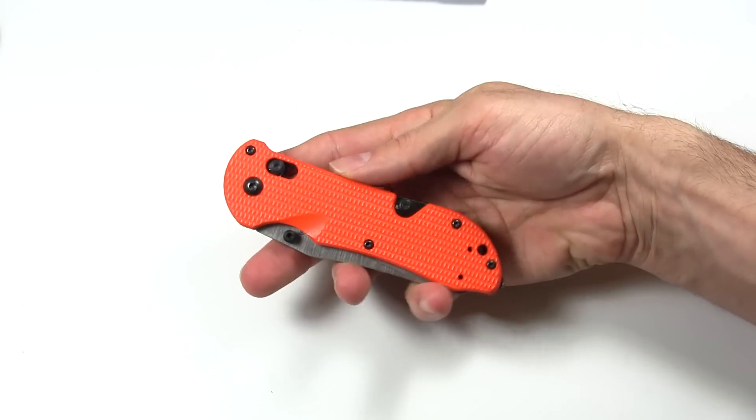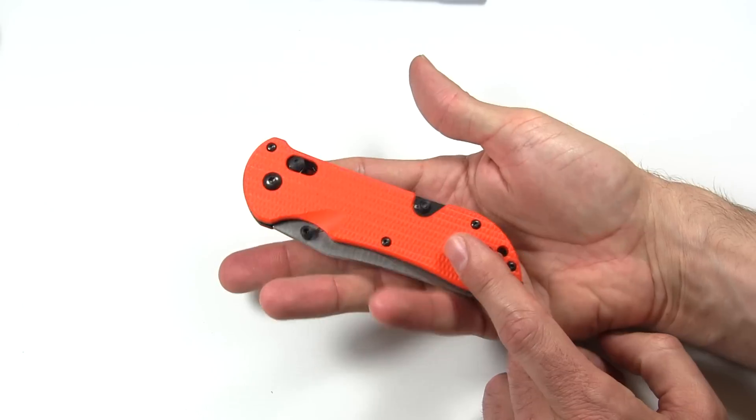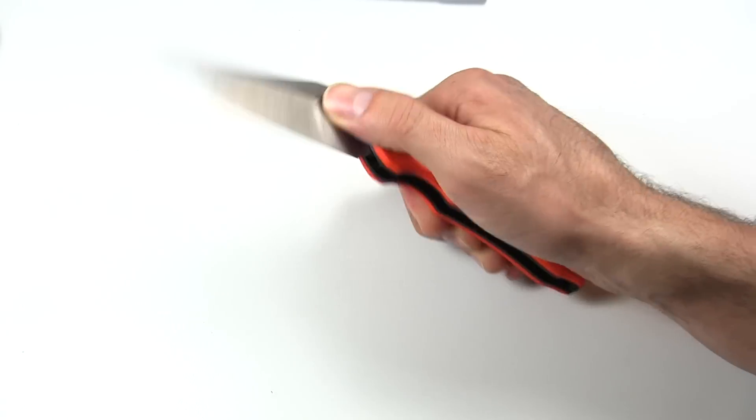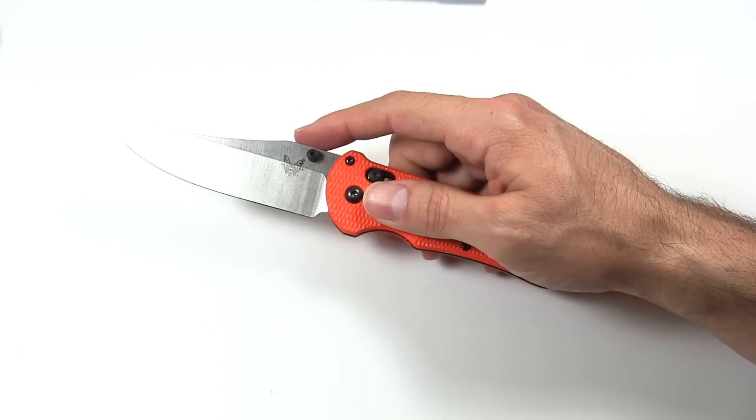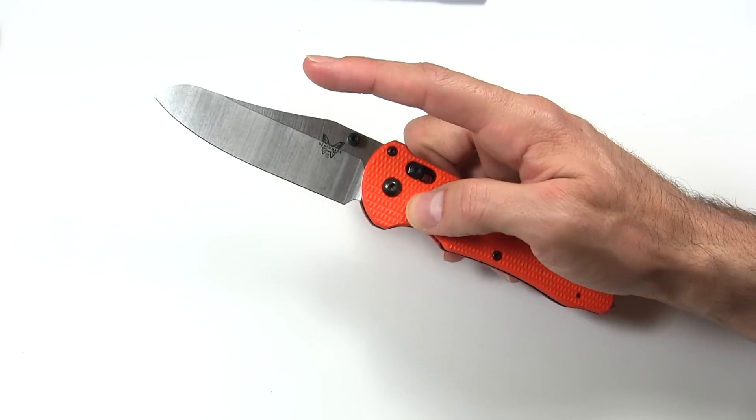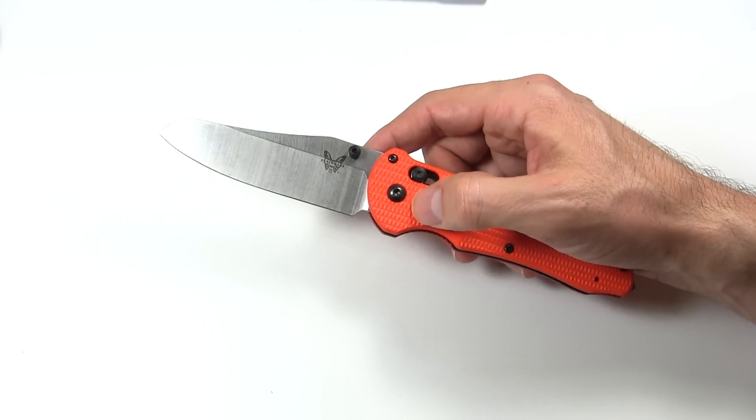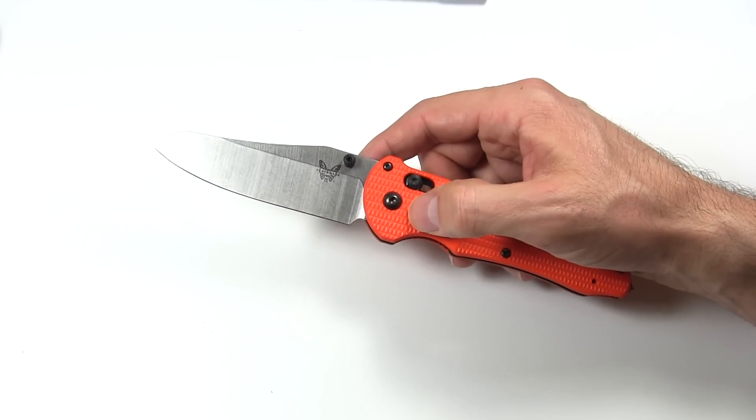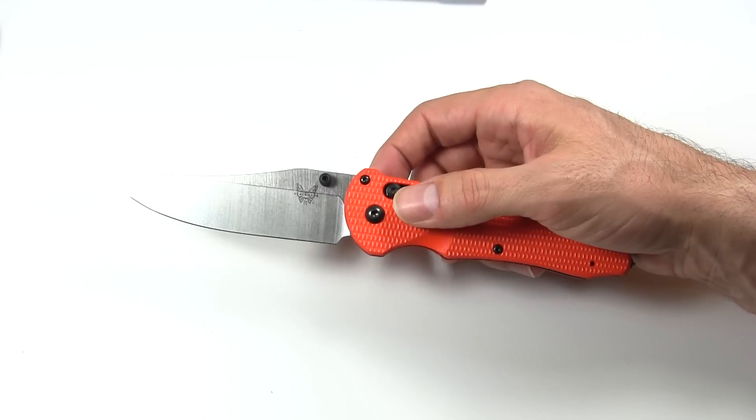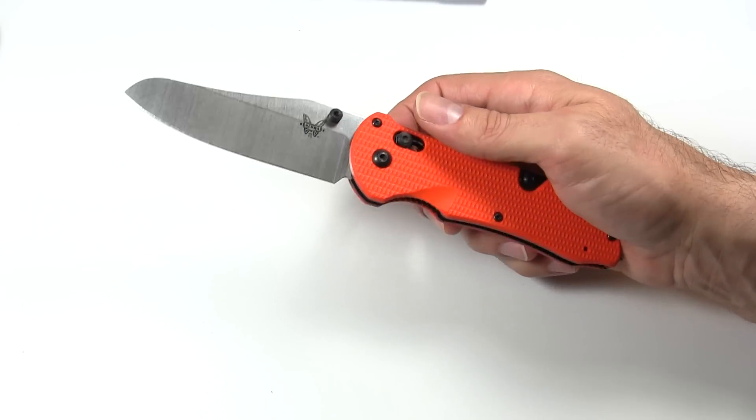Comes with a couple different variations. Handles, you can either get this super bright orange handle, or there's also a black handle. The blade, it's the same blade style, the modified sheep's foot. But it comes in either the satin finish, or the black finish. And then either the plain, or the partially serrated blade. And you can mix and match each of those with each of them, depending on what kind of setup you're looking for.